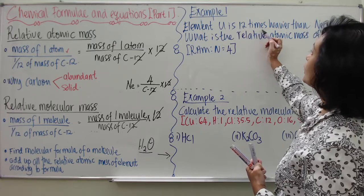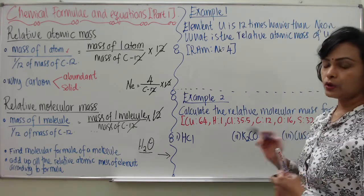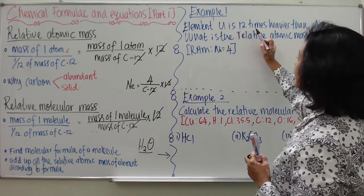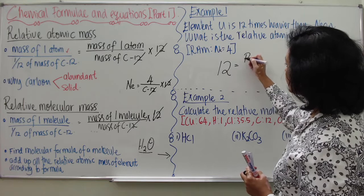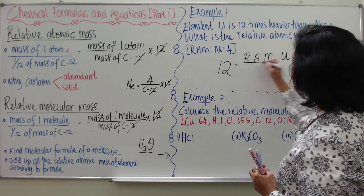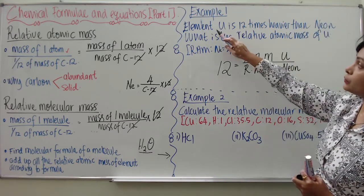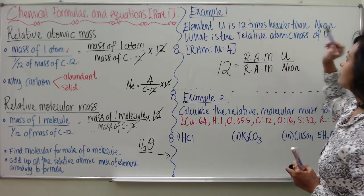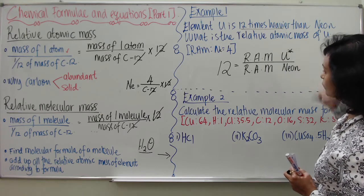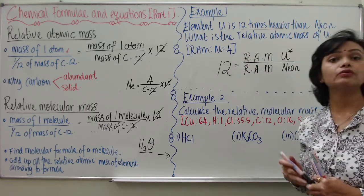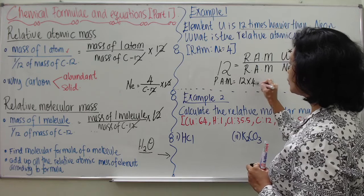Let me show one example: element U is 12 times heavier than Neon. What is the relative atomic mass of U? Since U is 12 times heavier than Neon, this means RAM of U divided by RAM of Neon equals 12. The RAM of Neon is 4, so RAM of U equals 12 times 4, which equals 48.